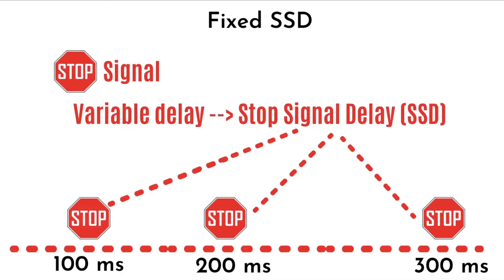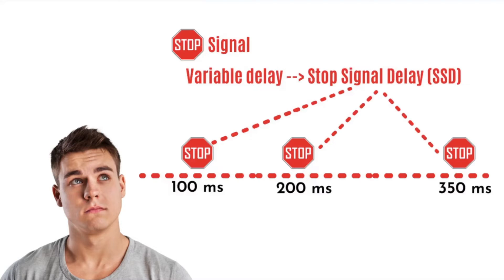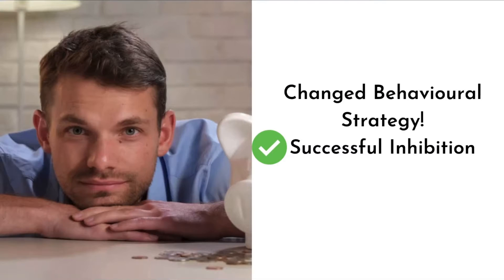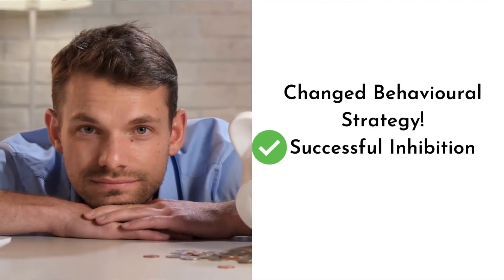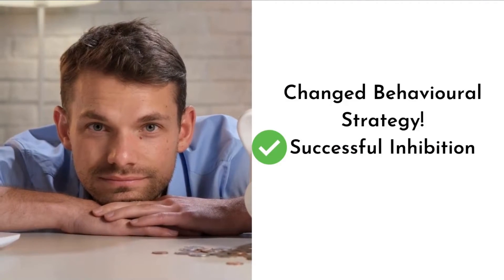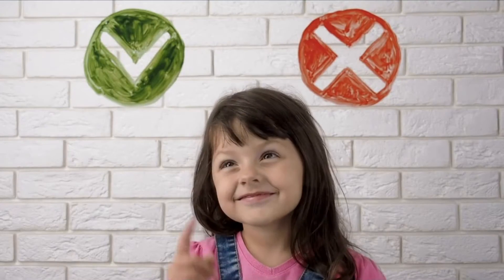However, a caveat of using fixed delays is that it can interfere with the dependent variables of interest. If there is a fixed SSD, it is possible that participants would predict when the Stop signal will be presented. This could impact their behavioral strategy — they could wait for the Stop signal in order to inhibit, thereby tampering with their true performance. Thus, it is recommended that a broad range of SSDs are presented.